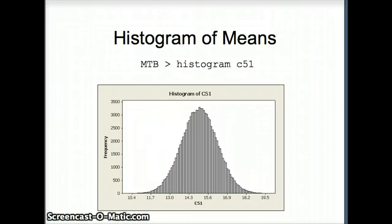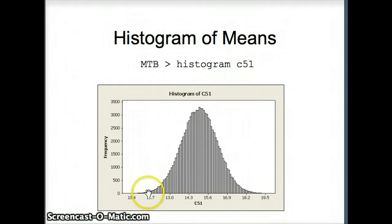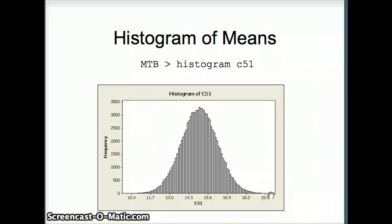Here is the amazing thing about the Central Limit Theorem. C51 is a column of averages, and even though the underlying data set was not bell-shaped, you can see that C51, our column of averages, is tending to follow a normal distribution. That is, in essence, what the Central Limit Theorem tells us.